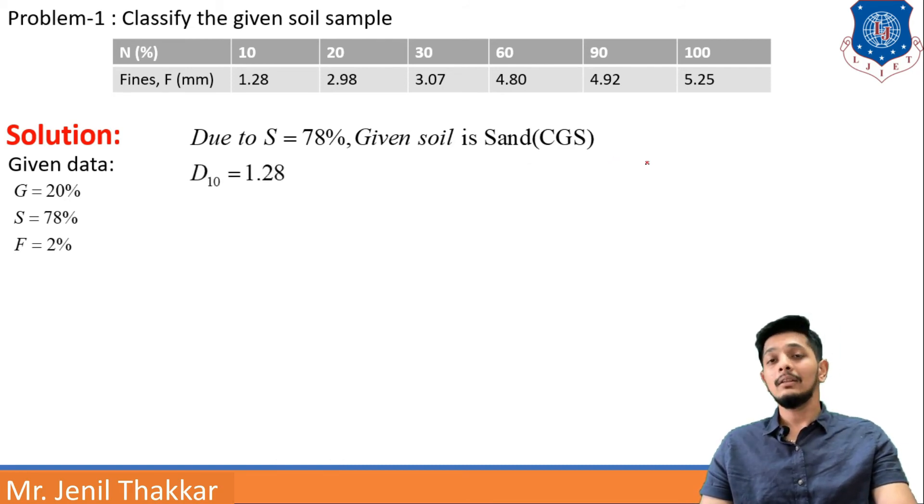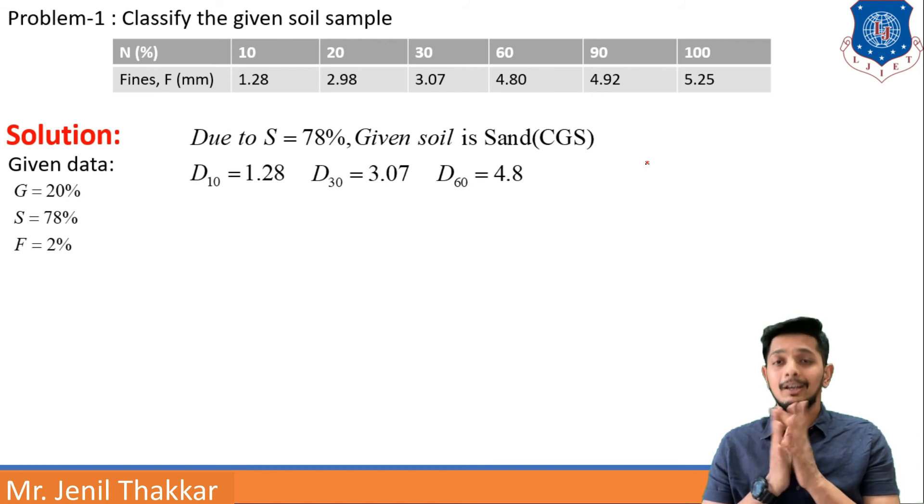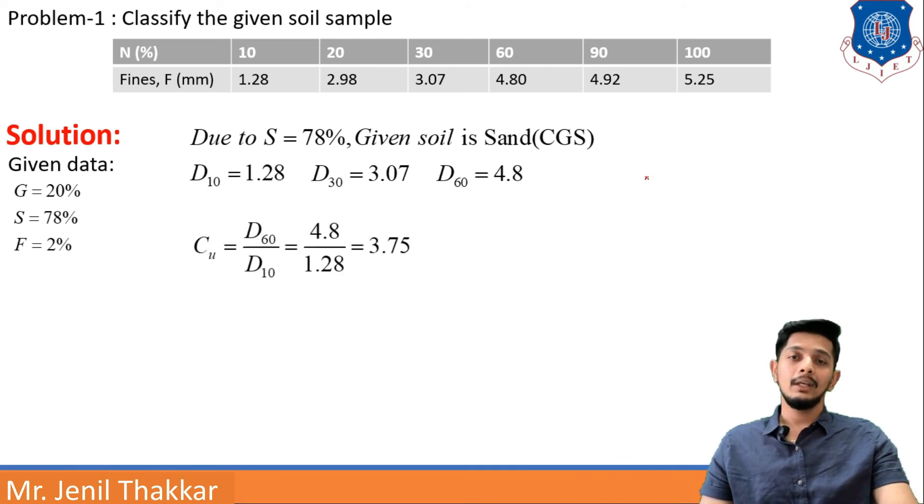Now we will write D10, D30 and D60 values because D10, D30 and D60 values are most important values for us as we have discussed Cu and Cc coefficient of uniformity and Cc is coefficient of curvature. Both will be helpful to find out and classify the soil sample. Now D10 comes out as 1.28 from the table, D30 comes out as 3.07 from the table and D60 comes out as 4.8 from the table. So all the values are not useful, 3 values are most important for us: D10, D30 and D60.